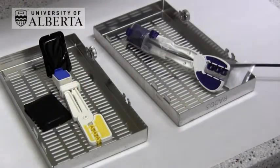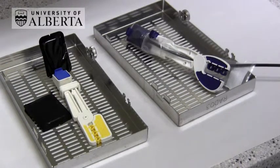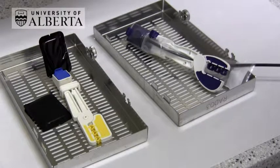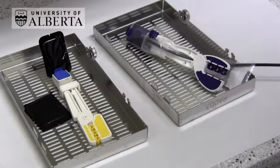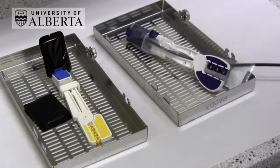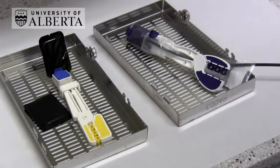Most patients tolerate anterior periapicals being taken with the XCP holder, the paralleling technique, very well. However, when a patient presents with a shallow floor of the mouth or palate, palatal tori or mandibular tori, or very broken down teeth, the bisecting angle technique can be useful. Use a size 1 direct sensor or plate.